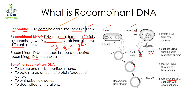Here we can see we have this part — the plasmid — and this part — the human gene. As they are two different DNA molecules coming from two different species, this combined DNA is known as recombinant DNA.